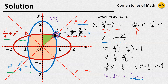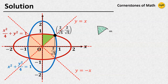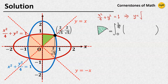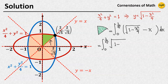So now with this point obtained, we can finally calculate the area of the green region. It is the integral from 0 to 2 over square root of 5 of the red ellipse's upper half, which is square root of 1 minus x squared over 4, minus the line y equals x. So we have the integral of square root of 1 minus x squared over 4 dx, minus the integral of x dx.